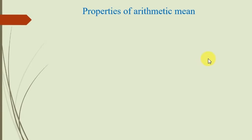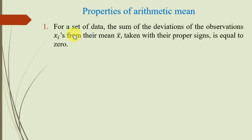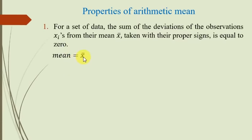Now we will study properties of arithmetic mean. First property: For a set of data, the sum of deviations of the observations xᵢ from their mean x̄, taken with their proper signs, is equal to zero. جتنے بھی ہم deviation پائند کرتے ہیں — اگر positive ہے تو positive لکھو، اگر negative ہے تو negative لکھو — اور پھر تمام deviations کو add کرتے ہیں تو اس سے zero آجائے گا۔